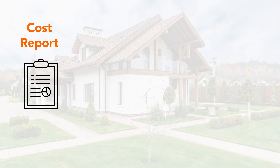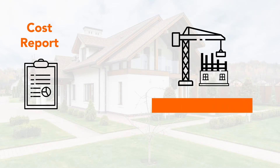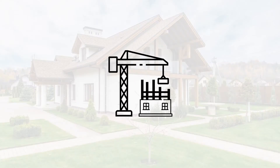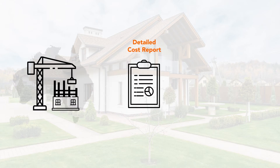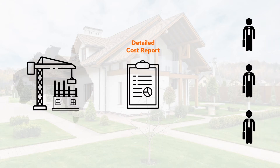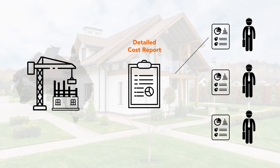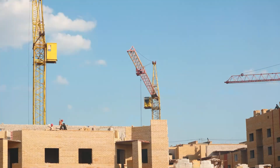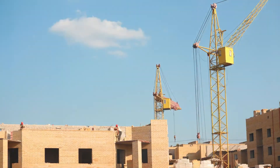A detailed cost report's main function is to set out all the work needed to complete a specific construction project. The report, which is sometimes called a Bill of Quantities, lays out the work description and the quantities of materials needed to be completed. Any construction project in Australia needs a detailed cost report because its primary purpose is to allow all contractors tendering for a contract to quote on exactly the same information. It's an important tool to keep in your construction toolbox because it can ensure that your project runs smoothly and as close to budget as possible.